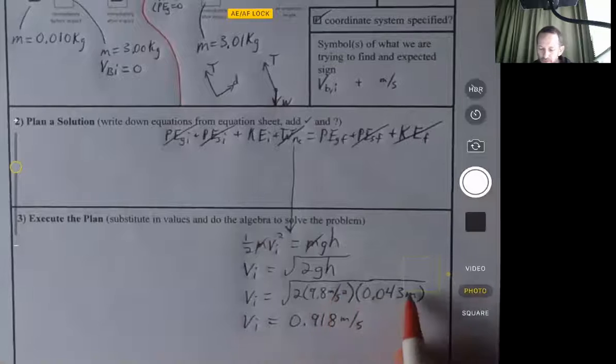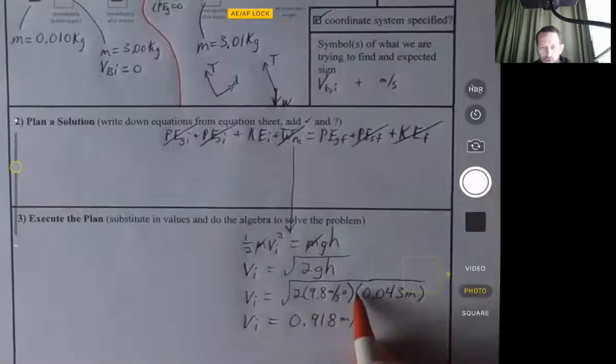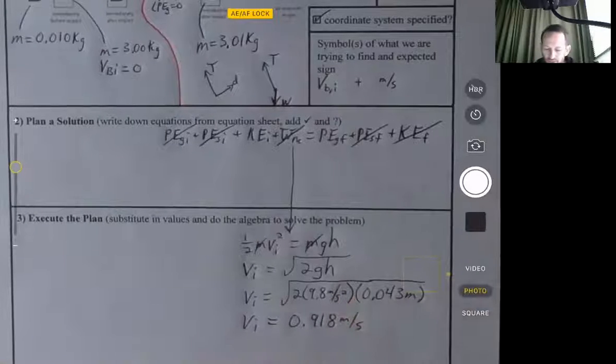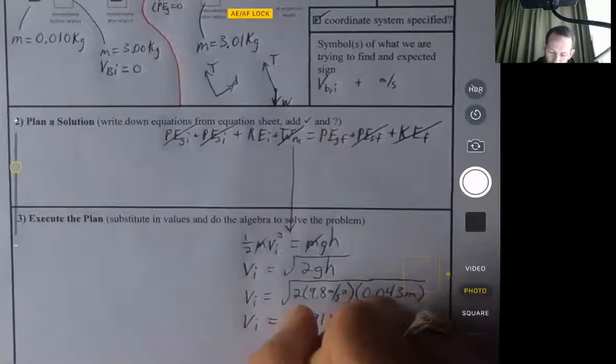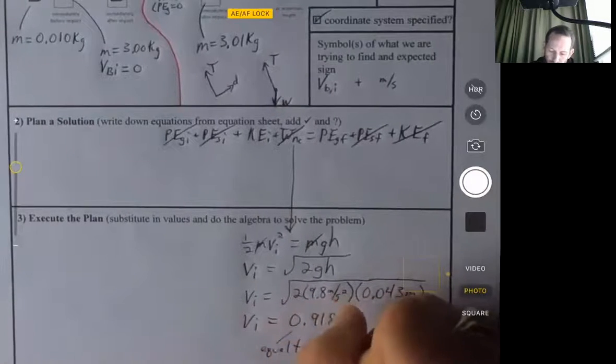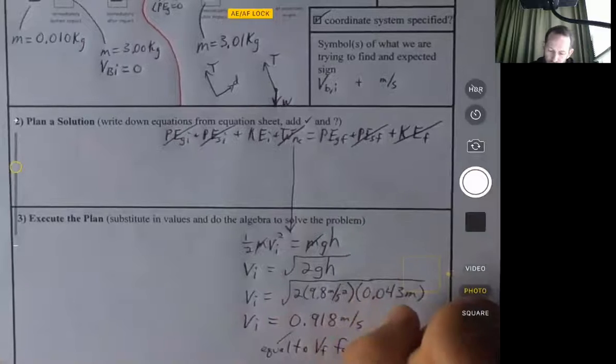0.918 meters per second. That meter squared per second squared, take the square root of the units as well as the number. And so now this is also equal to VF for the collision.